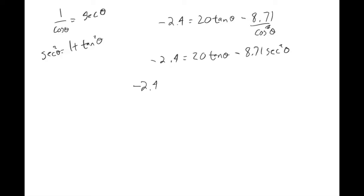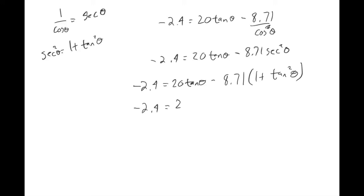Now I can replace secant squared theta with (1 plus tangent squared theta). Distributing the 8.71 to both terms, you would get: 20 tan theta minus 8.71 minus 8.71 tangent squared theta. Adding the 8.71 to the other side gives 6.31 on that side.